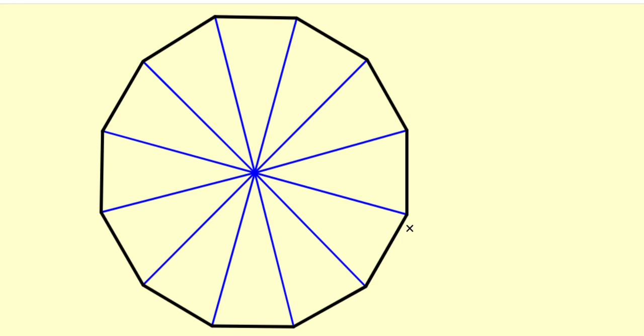So we have drawn a twelve-sided regular polygon. In other words, we have drawn a regular dodecagon.